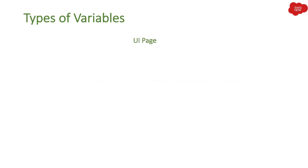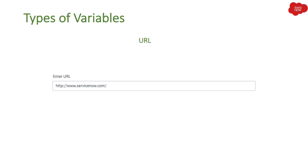Then we have UI Page. Similar to UI Macro, if you want to show extra information to your end user, you create a UI page and reference it in your variable so it is displayed to the end user. The next variable is URL — if you want your end user to enter a URL, you select the URL type of variable.